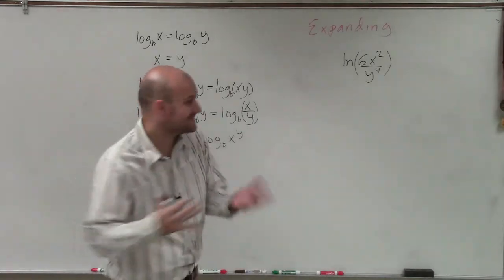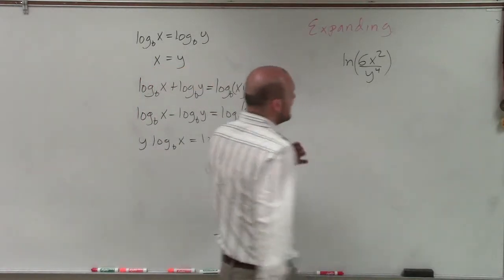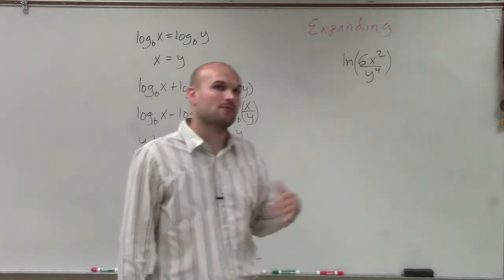All right, all right. So in this case, ladies and gentlemen, what I have is ln of 6x squared divided by y to the fourth.